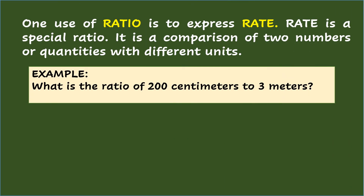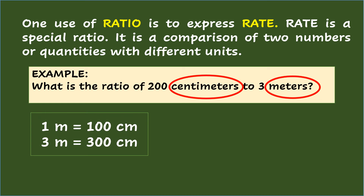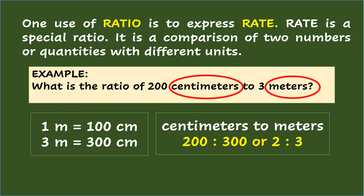One use of ratio is to express rate. Rate is a special ratio. It is a comparison of two numbers or quantities with different units. For example, what is the ratio of 200 centimeters to 3 meters? Take note that centimeters and meters are different units, so you will make them the same units by getting the equivalent centimeters of the given meters. Since 1 meter equals 100 centimeters, 3 meters equals 300 centimeters. So the ratio of 200 centimeters to 300 centimeters is 200 is to 300, or simplifying it is 2 is to 3.